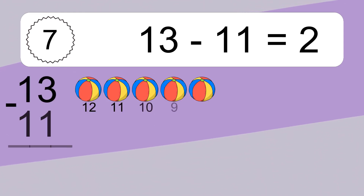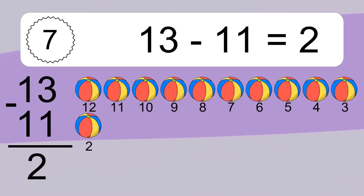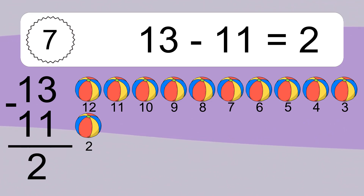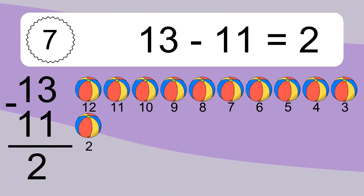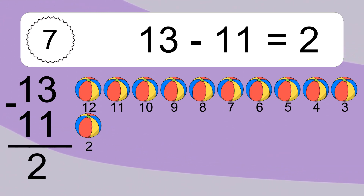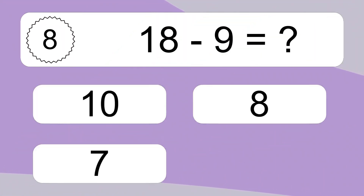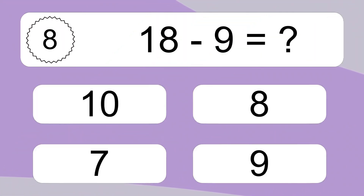13 minus 11 equals what? 13 minus 9 equals 2. Let's count it! 12, 11, 10, 9, 8, 7, 6, 5, 4, 3, 2.